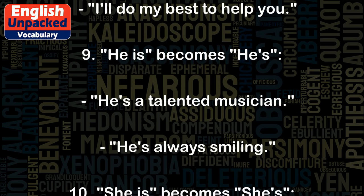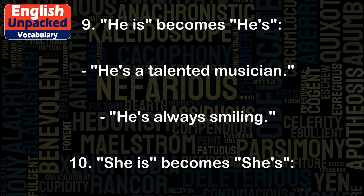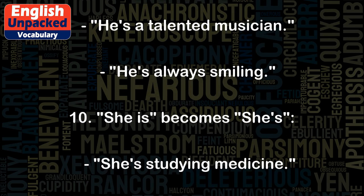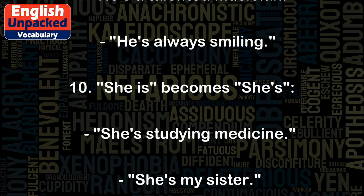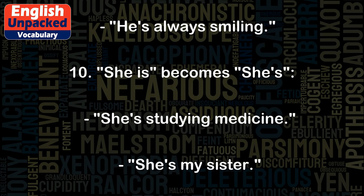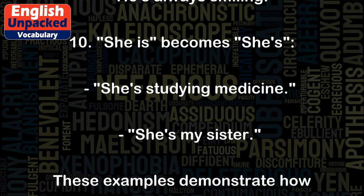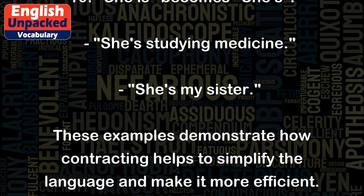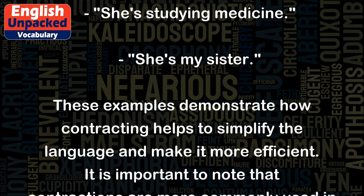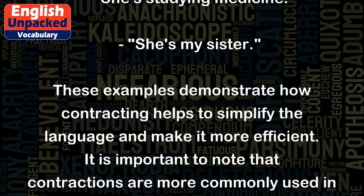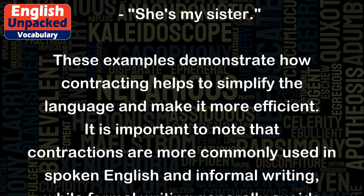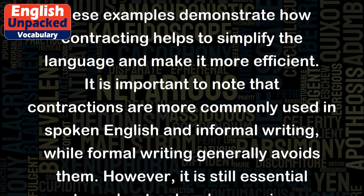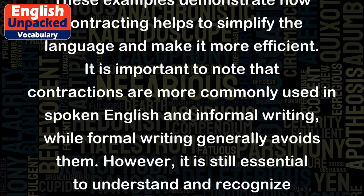10. "She is" becomes "she's." For example: "She's studying medicine." "She's my sister." These examples demonstrate how contracting helps to simplify the language and make it more efficient. It is important to note that contractions are more commonly used in spoken English and informal writing, while formal writing generally avoids them.